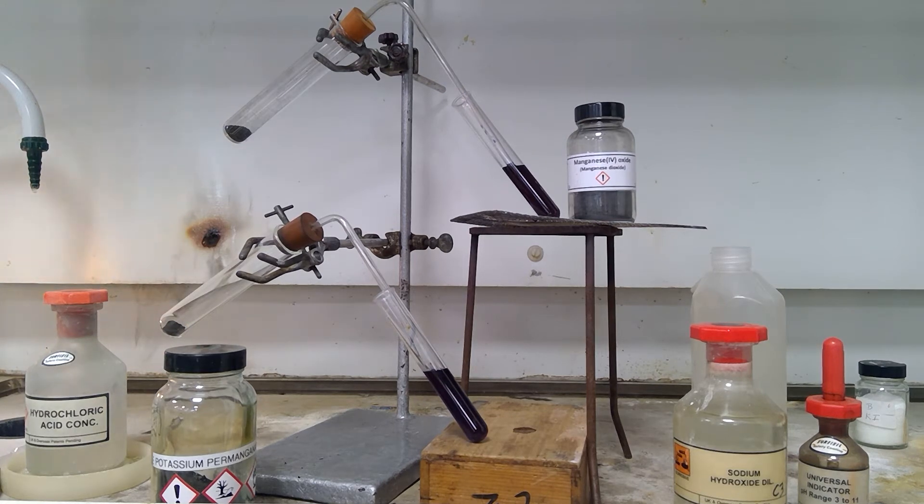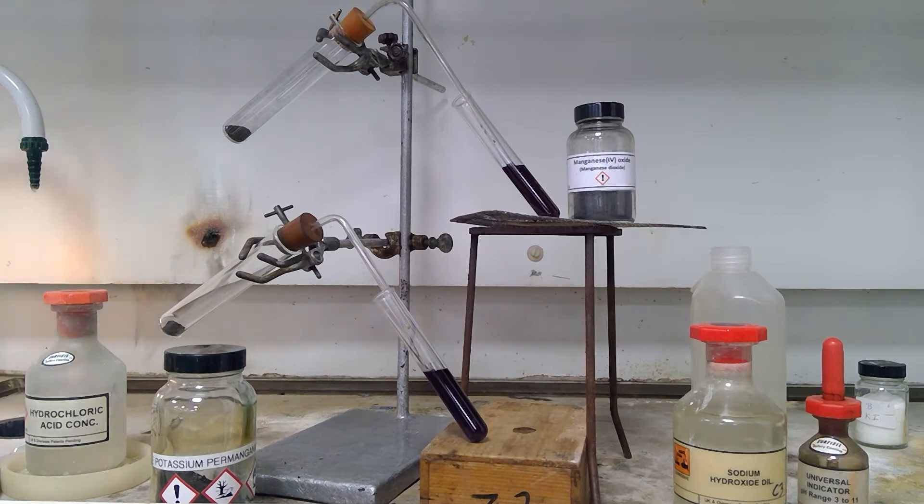This experiment links to the group 7 practical, the halogens, which is frequently done at Rugby School. It is experiment 1 where we compare the reactivity of potassium manganate 7, potassium permanganate, and manganese 4 oxide in their ability to oxidize the chloride ion in concentrated hydrochloric acid to make the gas chlorine. So these are potential methods of preparing chlorine.